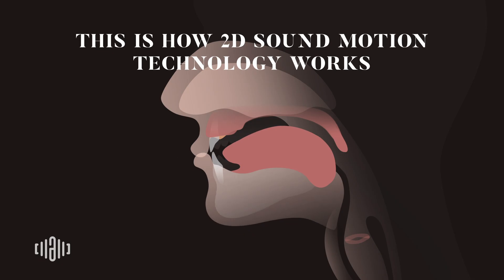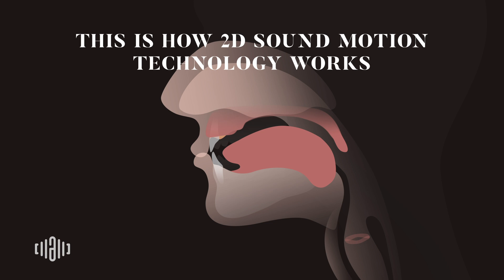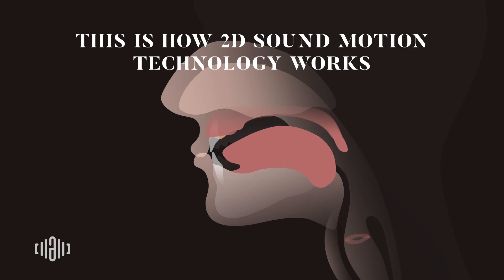Let me pronounce this sound for you. Listen carefully and try to imitate as close as possible. You hear aspiration or airflow. Focus on it and practice the t sound following the 2D Sound Motion Simulator.